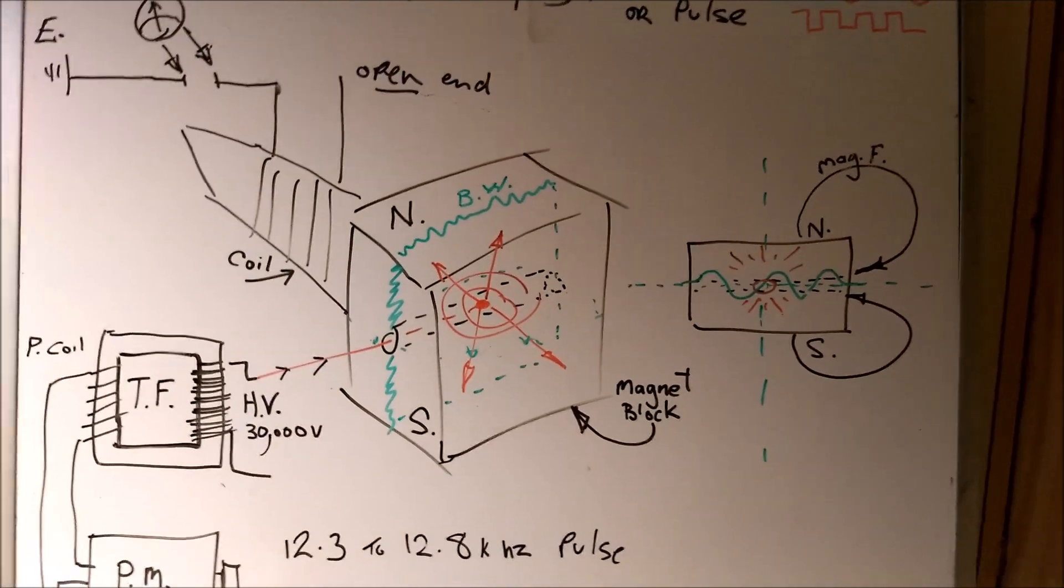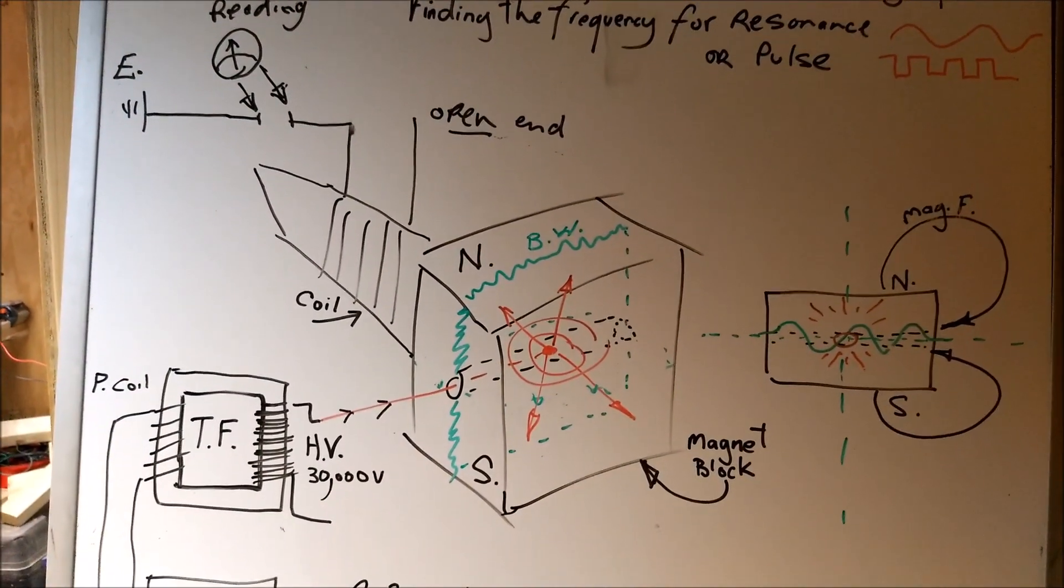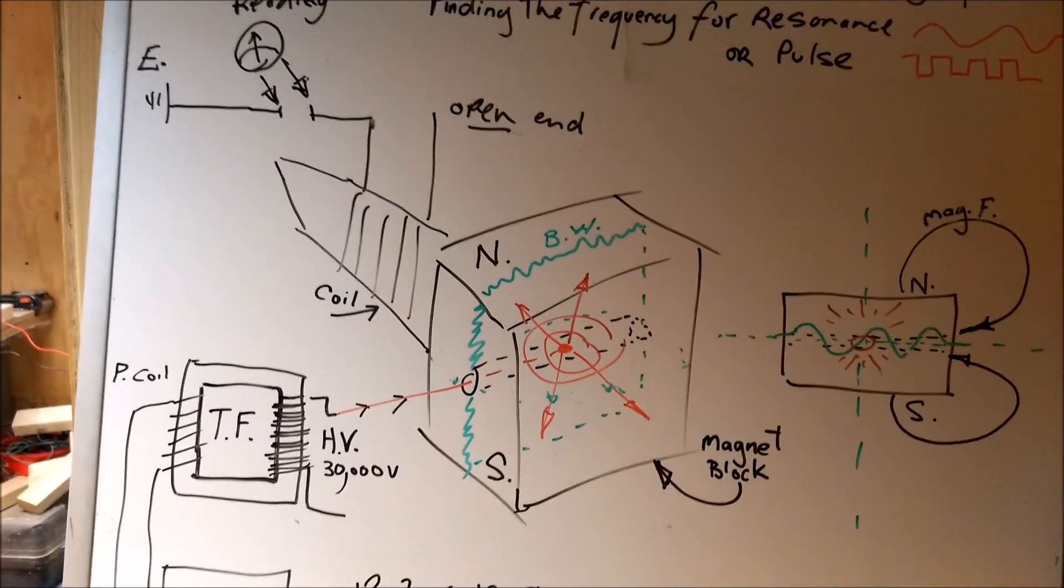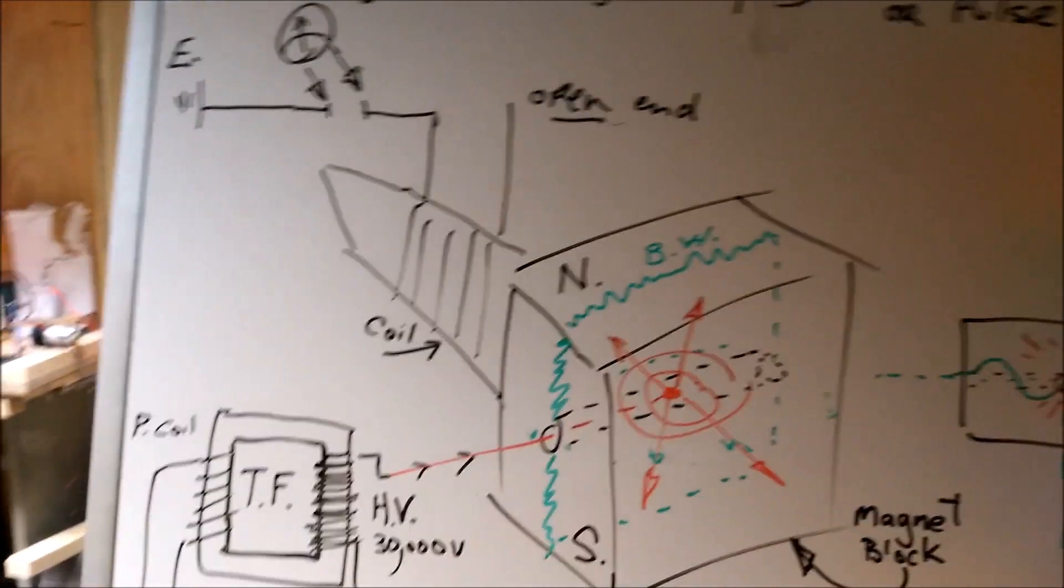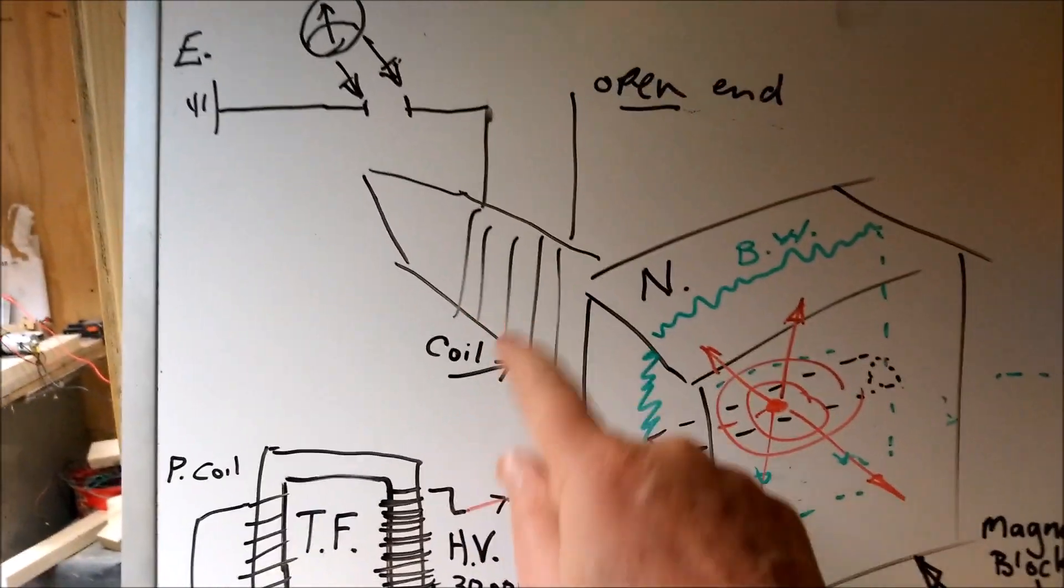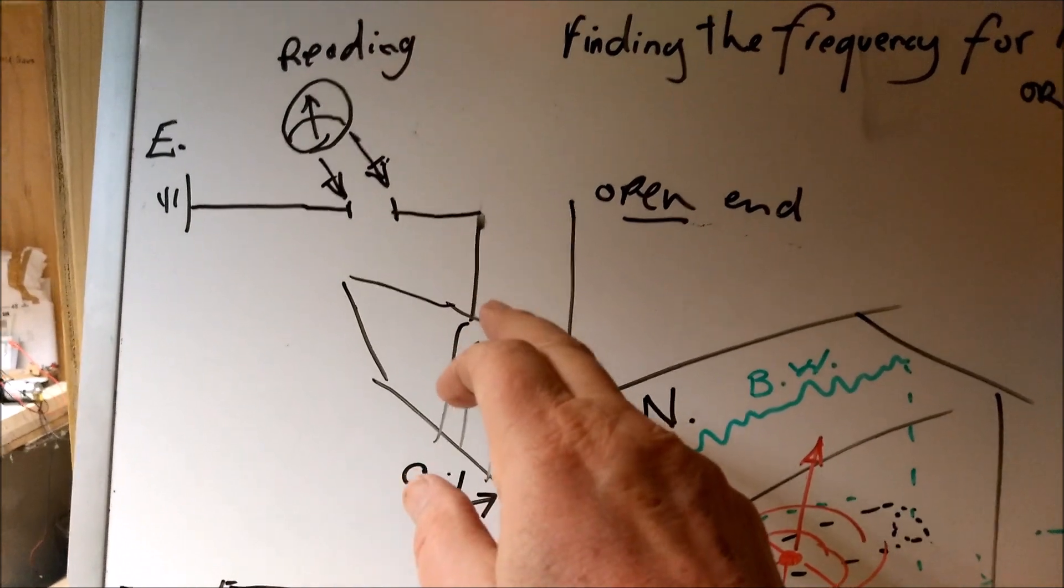We're going to have a go at pulsing the Bloch wall. The last time I did this I was getting some funny readings, so you'll probably see these funny readings that I'm getting today. The readings we're taking today, we've got a coil which is connected to the magnet, and we're taking the reading from one of the wires coming off the coil to the earth.